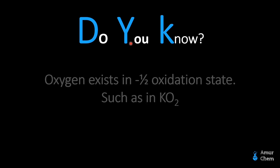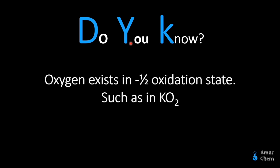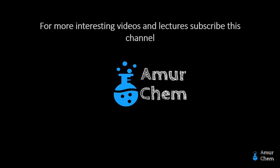Did you know oxygen can exist in a negative one-half oxidation state, such as in KO2 (potassium superoxide)? As potassium belongs to Group 1A, it has an oxidation state of positive 1. To balance this molecule, each oxygen atom acquires an oxidation state of negative one-half, and both oxygen atoms collectively form a charge of negative 1.